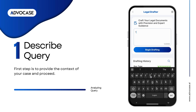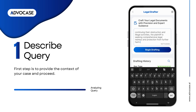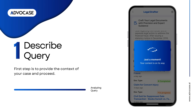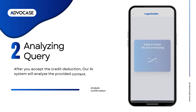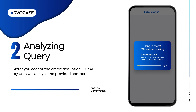The first step is to provide the context of your case and proceed. After you accept the credit deduction, our AI system will analyze the provided context.